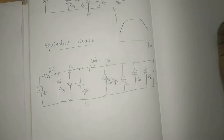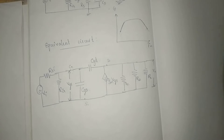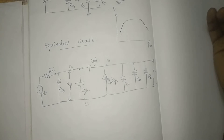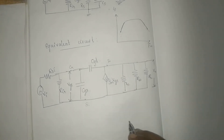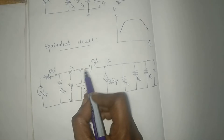CGD is a feedback capacitance, since it connects the output back to the input. To handle this feedback capacitor, we use the Miller effect. Using the Miller theorem, we split the capacitance into an input-side value and an output-side value.